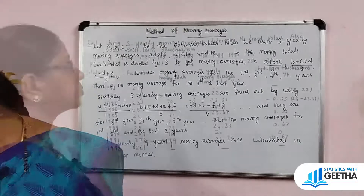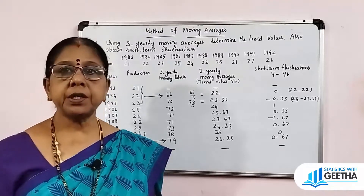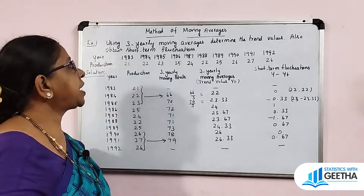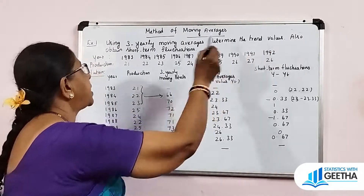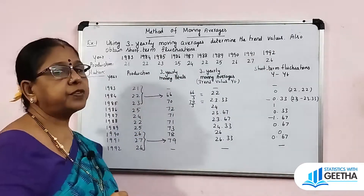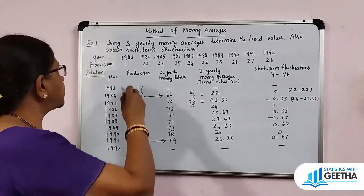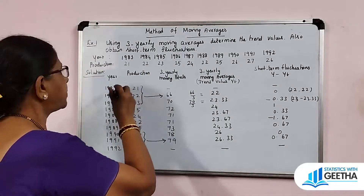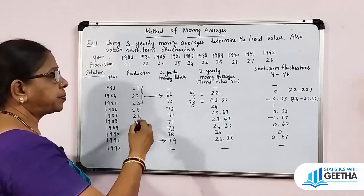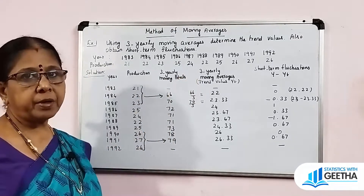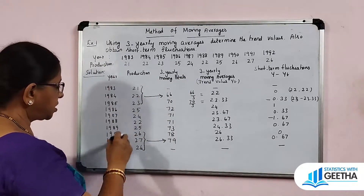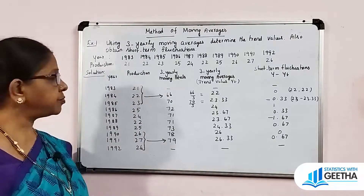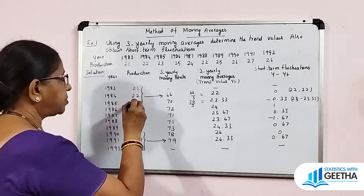Now let's look at an example. The exercise is: using 3-yearly moving averages, determine the trend values and also obtain short-term fluctuations. The data gives year and production values. In the solution, we will prepare a table with year, observed values of production — these are A, B, C, D, E — and 3-yearly moving totals.